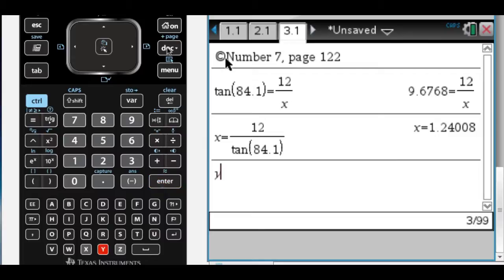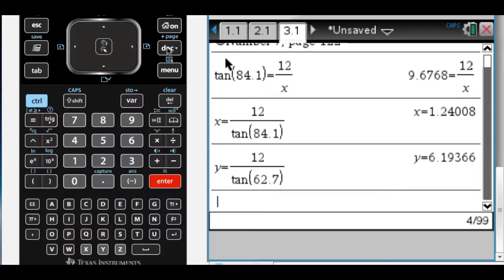And then y is equal to, so y is another angle, and it's also opposite that side. So it's going to be this, 62.7.